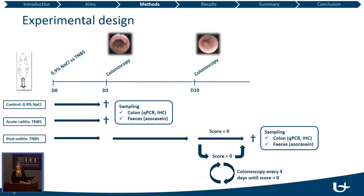For the post-colitis group, we performed another colonoscopy at day ten. At this point, most animals were in the post-inflammatory phase with no signs of inflammation, giving a colonoscopic score equal to zero. However, some animals still had a score greater than zero, so we performed a colonoscopy every four days until the score reached zero. These animals were then sacrificed and the same colon and fecal samples were collected.